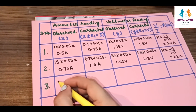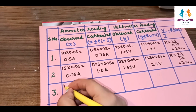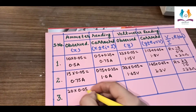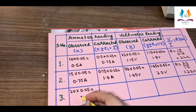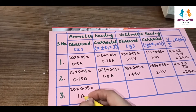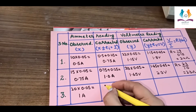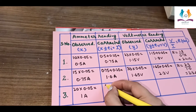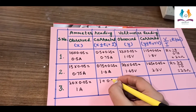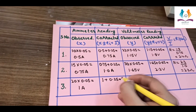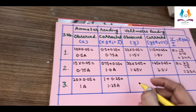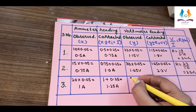Let's do the calculation. The ammeter reading is 20 divisions multiplied by the least count of 0.05, which equals 1 ampere. Adding the zero error of 0.25, the corrected reading is 1.25 ampere.